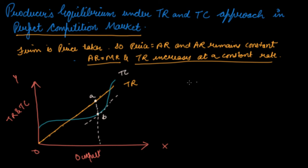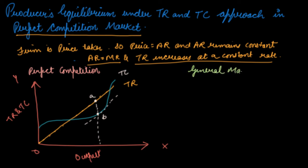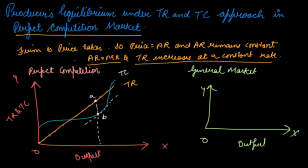The only difference between this case and the general market case is the shape of the TR curve. In the general market we take output, TR, and TC, and make a parallel profit graph — the same approach applies here. In perfect competition, the TR is a straight line, whereas in the general market TR has a different curved shape.